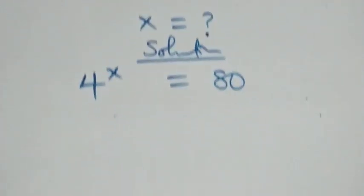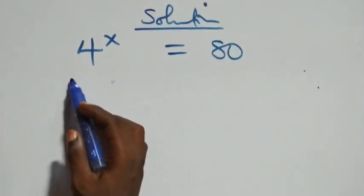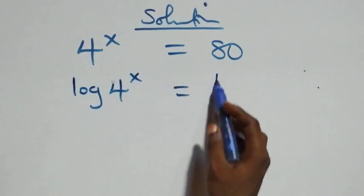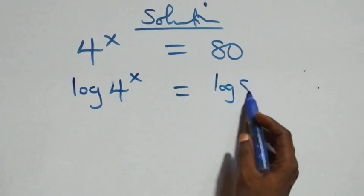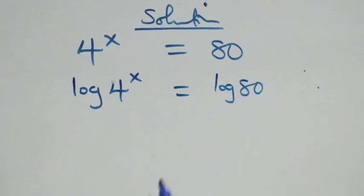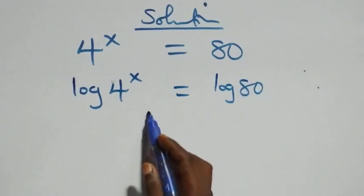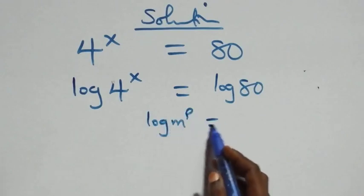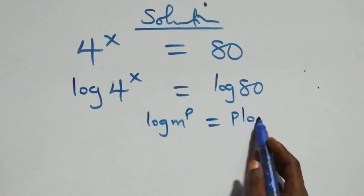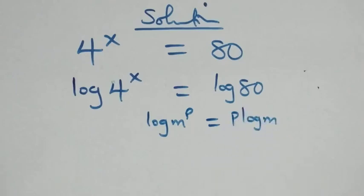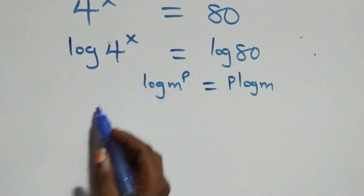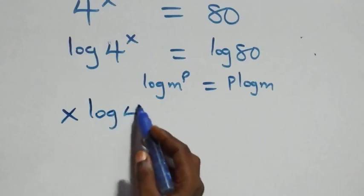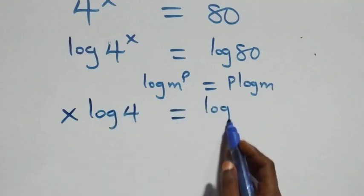We take the log on both sides, so we have log of four raised to the power x equals log eighty. We then apply the power rule of logarithms: log of m raised to power p is the same as p times log m. So this becomes x times log four equals log eighty.